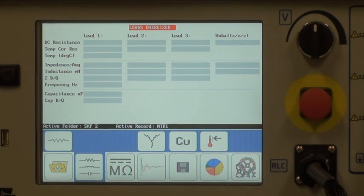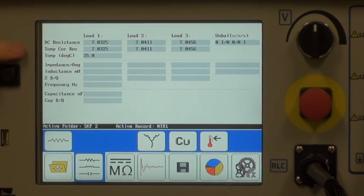As the test is being conducted, it populates the three windows here, and gives us an unbalanced level at the end. We also have the temperature recorded here.